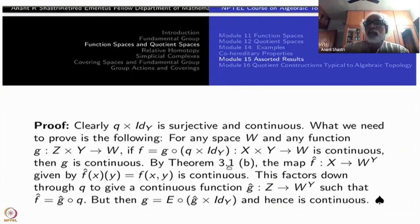This is the universal property of the quotient maps. It will define the quotient map if this is true for all G. As soon as F, the composite is continuous, G must be continuous. Now go back to the exponential correspondence that we have established earlier. A function like this is continuous is same thing as X to W^Y you get a map that is continuous.